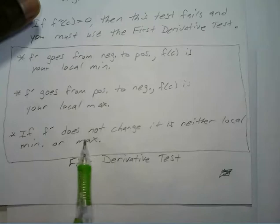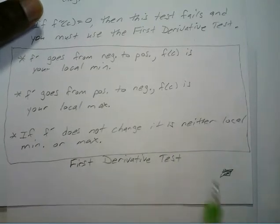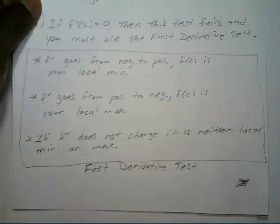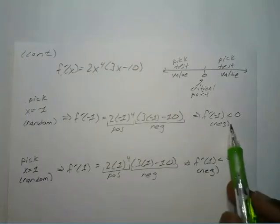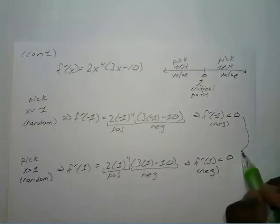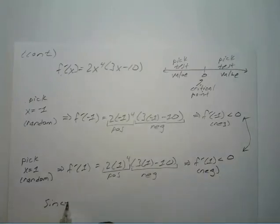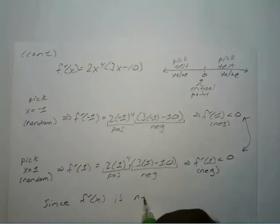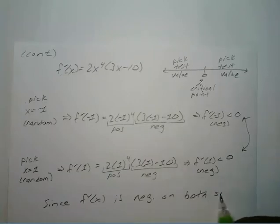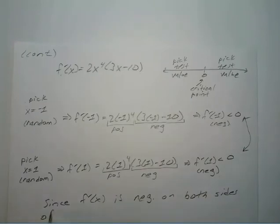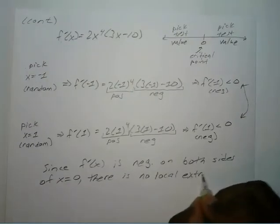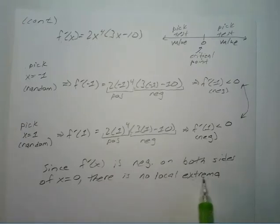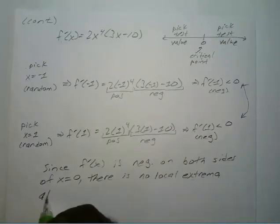When using the first derivative test, if f prime of x does not change on either side of the critical point, it is neither local minimum nor maximum. We see it went from negative to negative — not negative to positive or positive to negative. Since f prime of x is negative on both sides, or decreasing on both sides of x equals 0, there is no local extrema at that point.